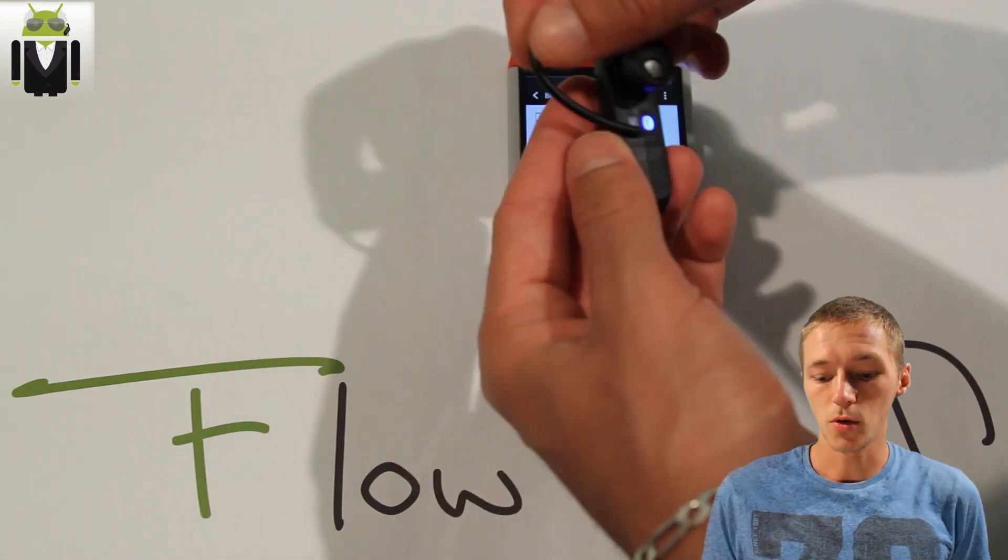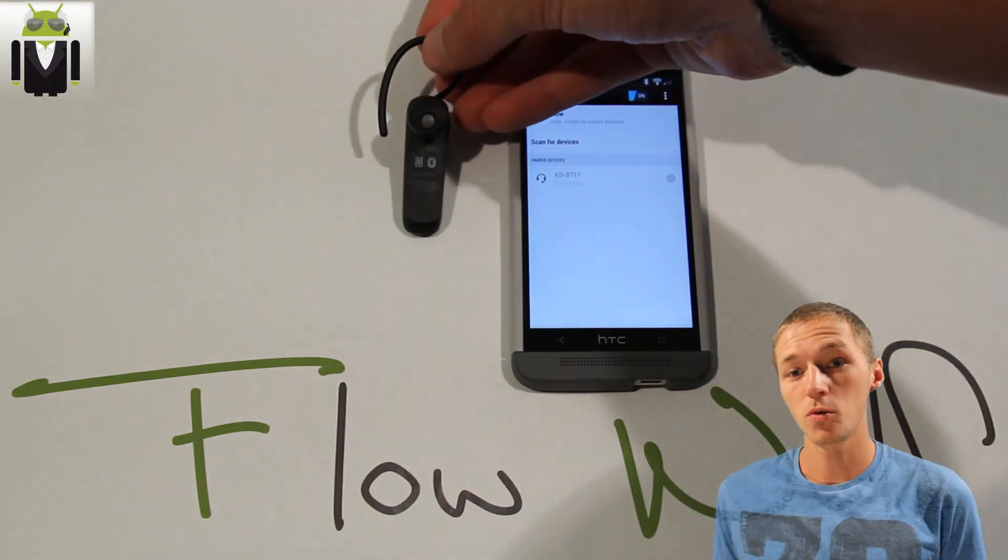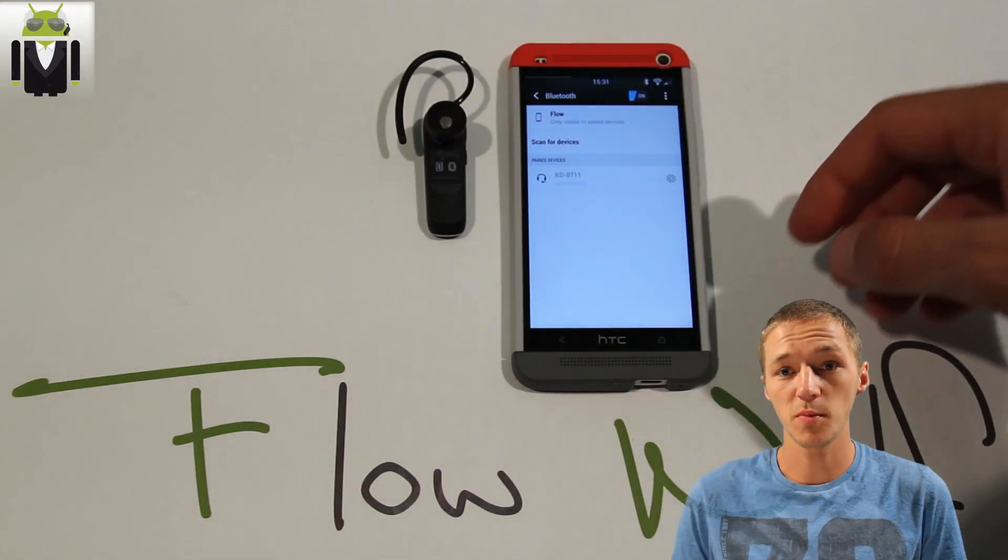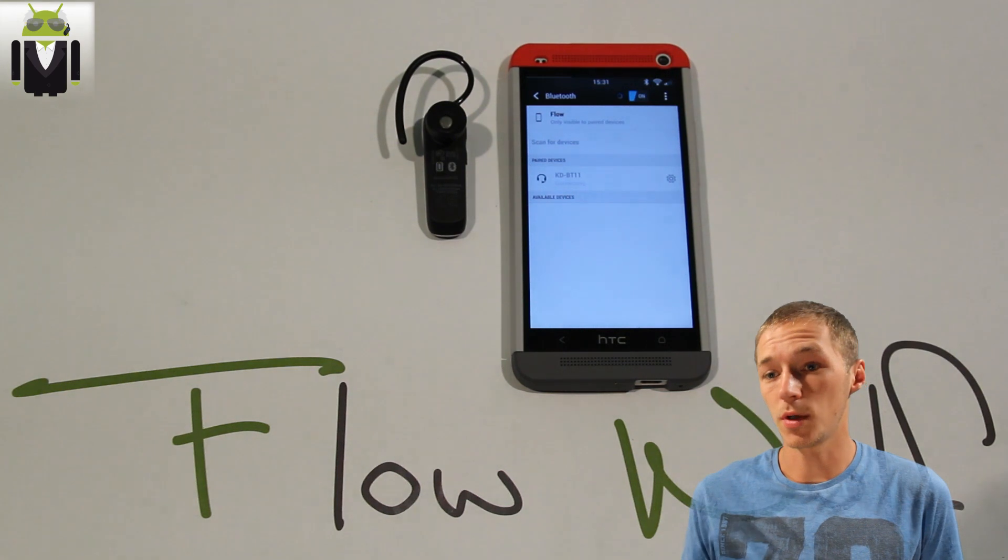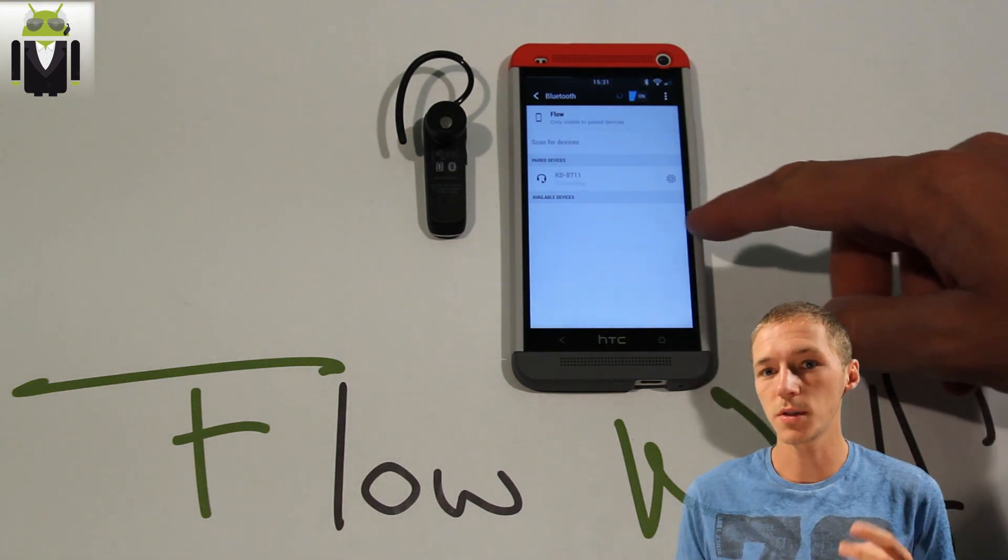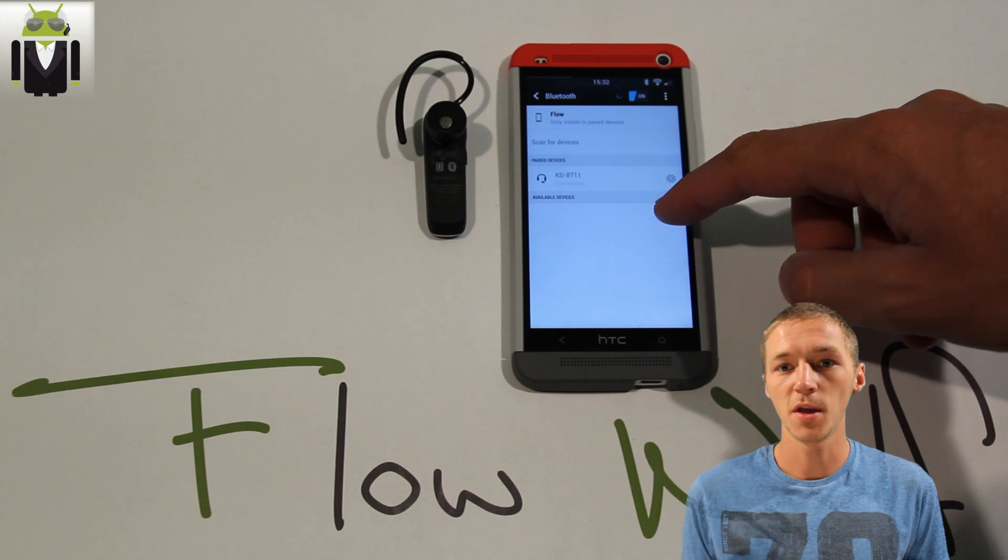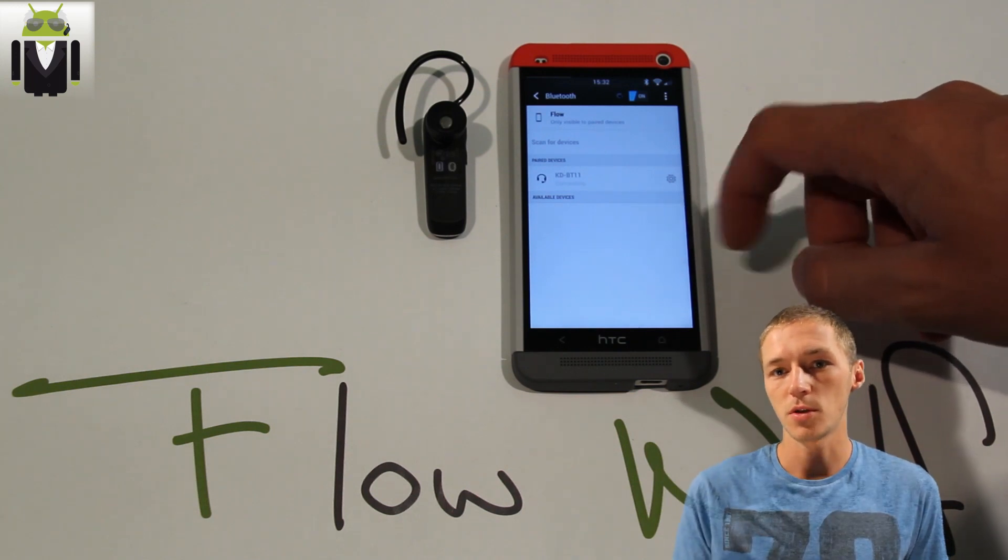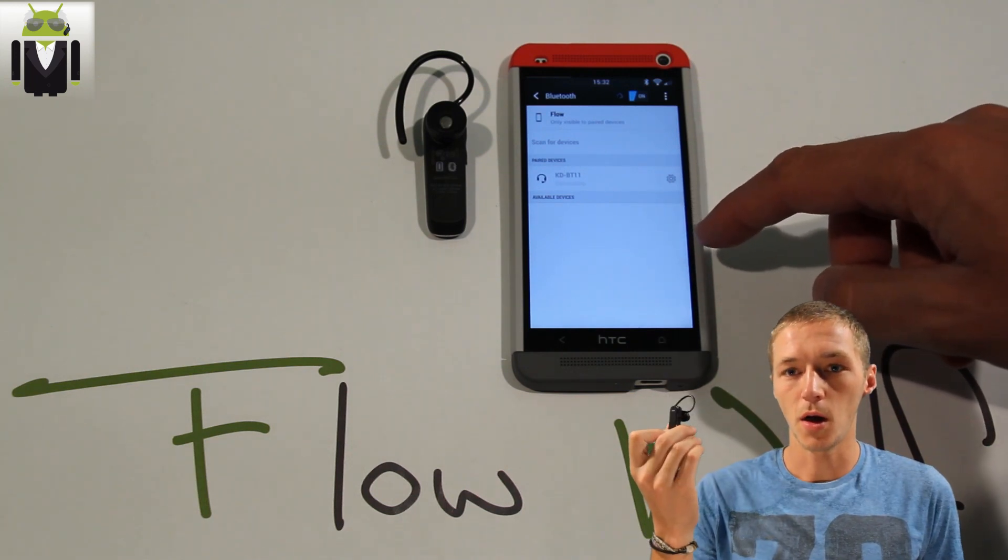You get on benefits the possibility to connect two different phones at the same time on the device. So you can connect, for example, two smartphones, and if you get a call, you just have to answer with it, and it recognizes which phone is connected to this earphone.